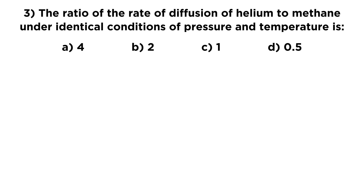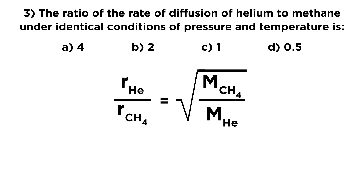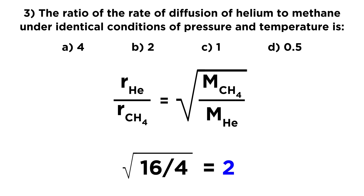For number three, we're looking at the ratio of the rate of diffusion of helium to methane. The ratio R_helium over R_methane equals the square root of the molar mass of methane over the molar mass of helium — note that the substances are inverted in the molar mass ratio. Plugging in: square root of 16 over 4 equals 2. So helium will diffuse twice as fast as methane because it has a quarter the molar mass. The answer is B, 2.